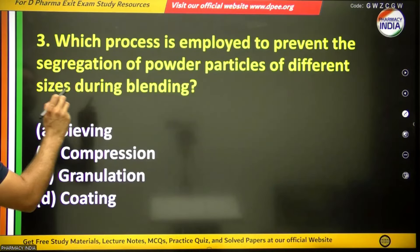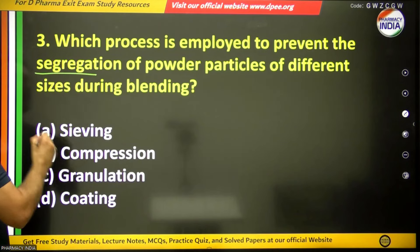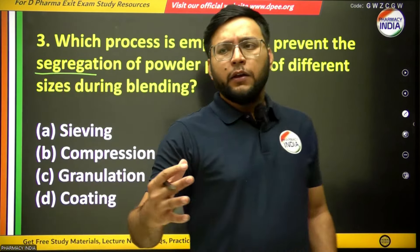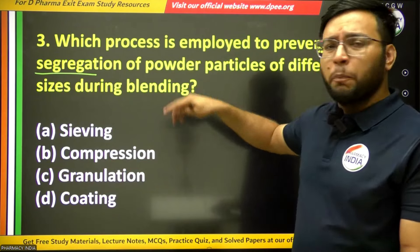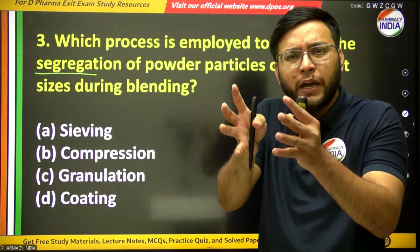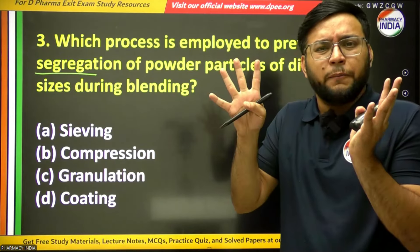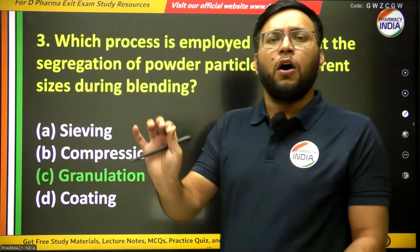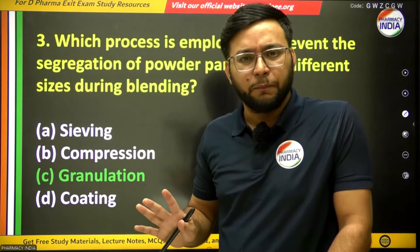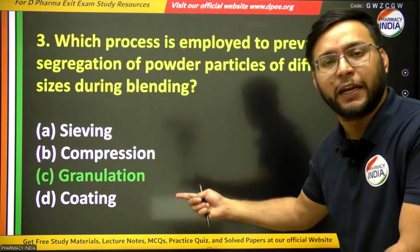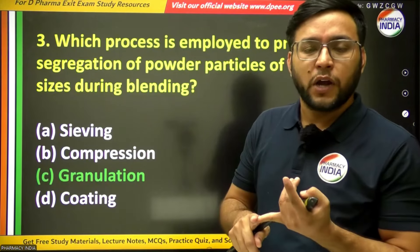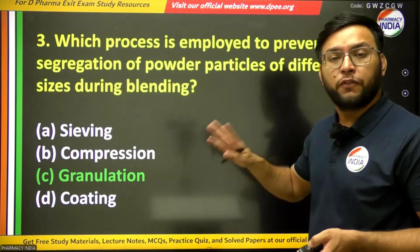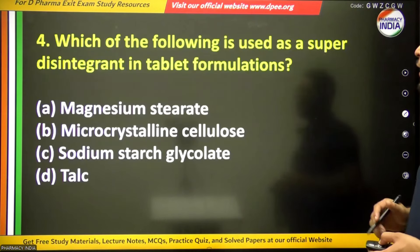The third question asks which process is employed to prevent the segregation of powder particles of different sizes during blending. Segregation means when powder particles of different sizes separate. The answer is granulation — by making granules from powder, granulation prevents segregation. There are three types of granulation: direct compression, double compression, and wet granulation.